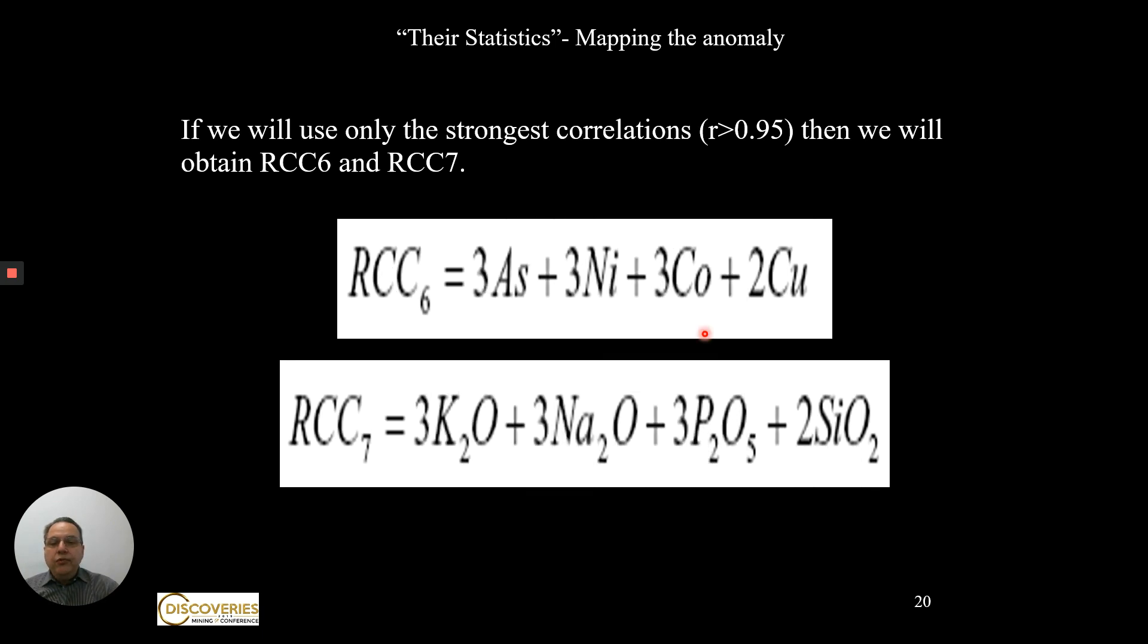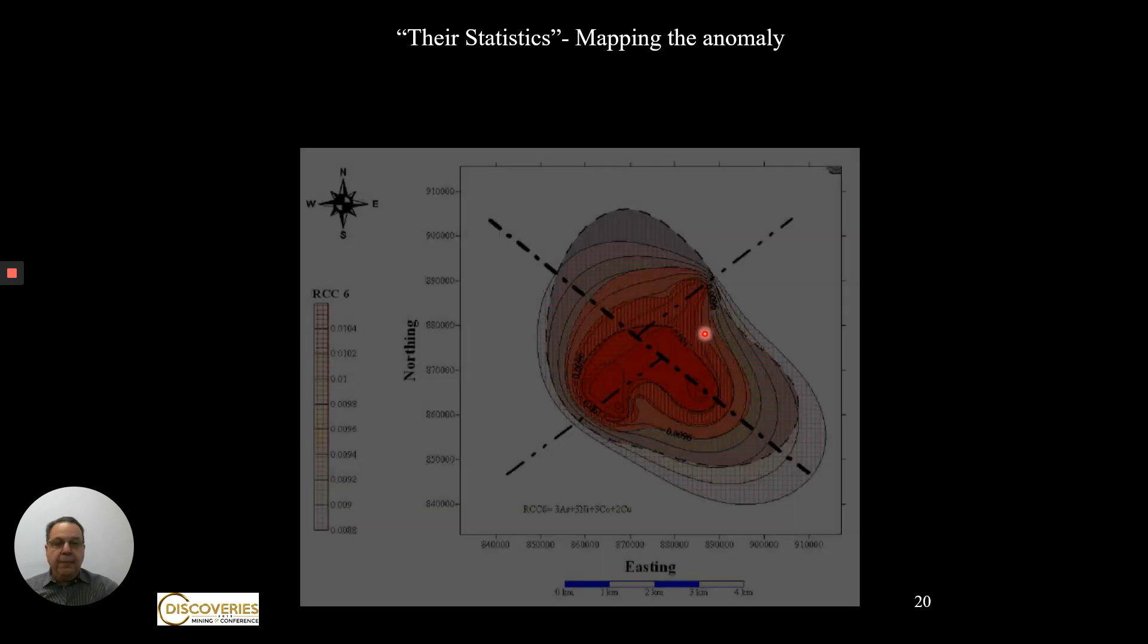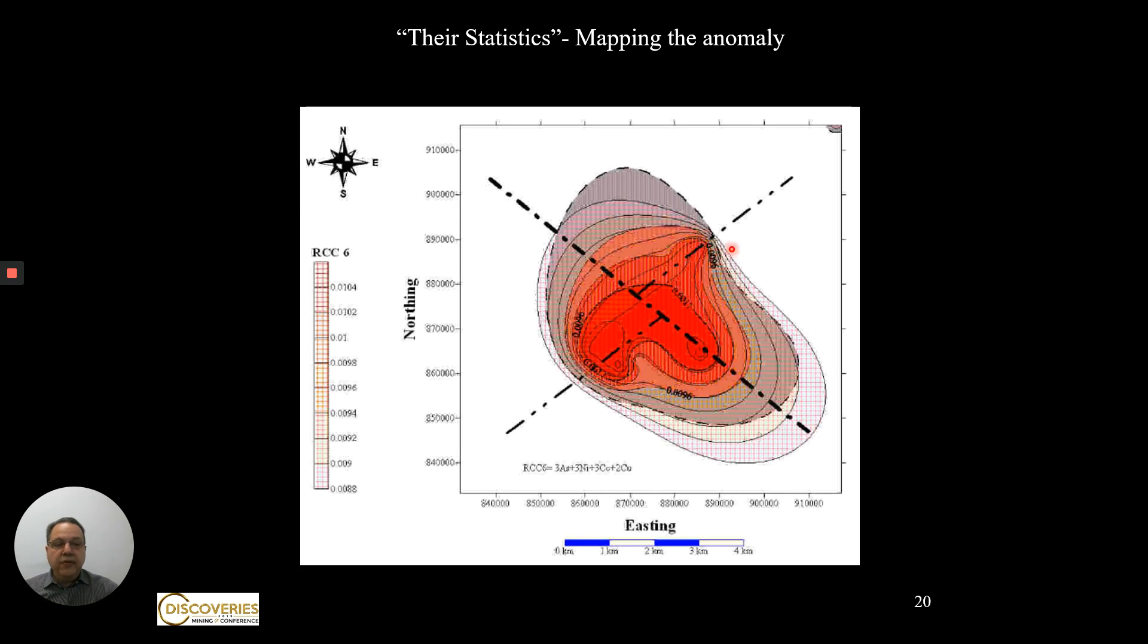Now if we only use the strongest correlations, like above 0.95, then we get these two coefficients and the map is almost a perfect correspondence, almost perfectly with the ore body. That is very good.